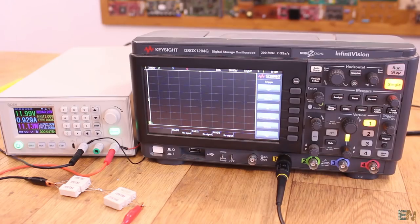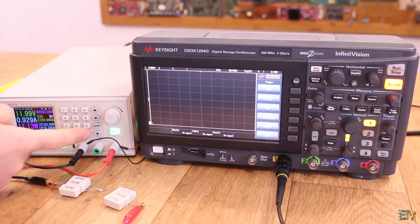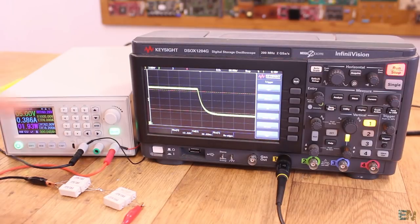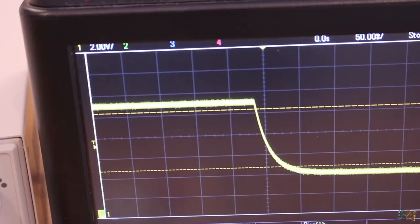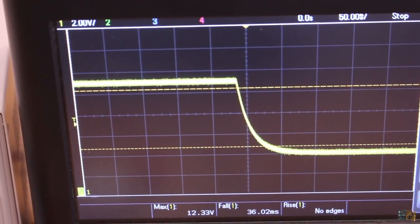Now let's do a reverse ramp. Under load, I decrease the voltage from 12V to 5V. As you can see, the output is discharging and then we have a stable 5V.